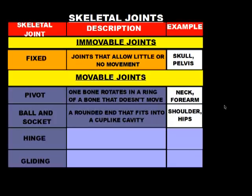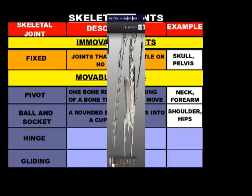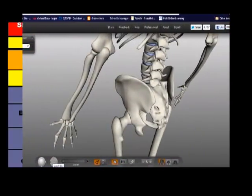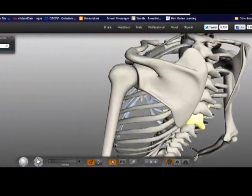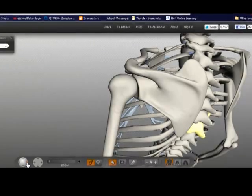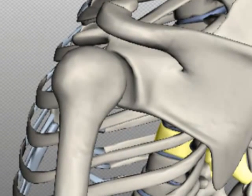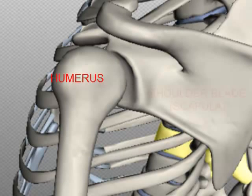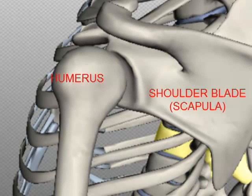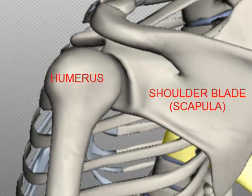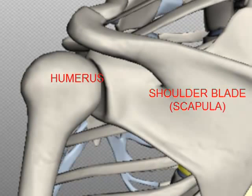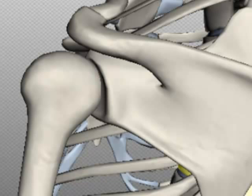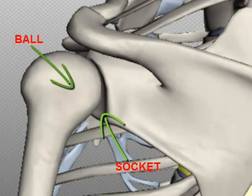We have ball and socket joints in our shoulders and in our hips. Scrolling up to Steve's shoulder, here's the humerus bone, which is the top part of our arm. The rounded end of the humerus bone connects into our shoulder blade, which is called the scapula. If you take a closer look, you'll notice there's a cup-like indentation in the scapula — that's where the rounded end of the humerus fits into.